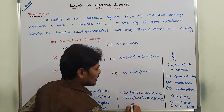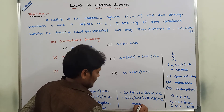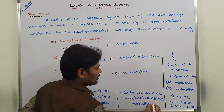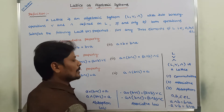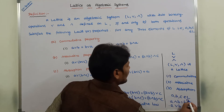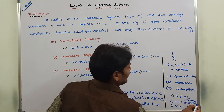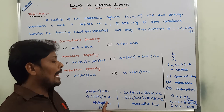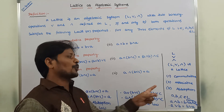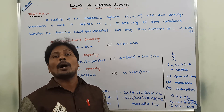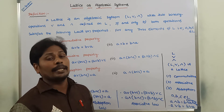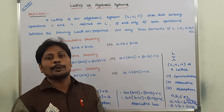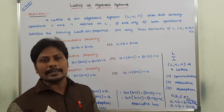So this is the absorption law, this is the associative law, and this one is the commutative law. Whenever a lattice satisfies these three properties — commutative, associative, and absorption law — with respect to the join operation and meet operation, then that lattice is said to be an algebraic system.